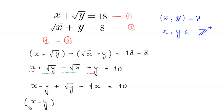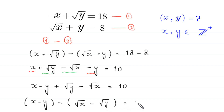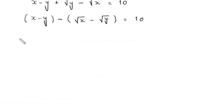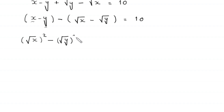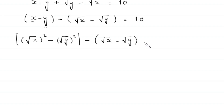We use parentheses to group x minus y, and apply the negative sign before the remaining two terms. So negative root x becomes positive root x and positive root y becomes negative root y. Now x can be written as root x whole squared, and root x minus root y is equal to 10.